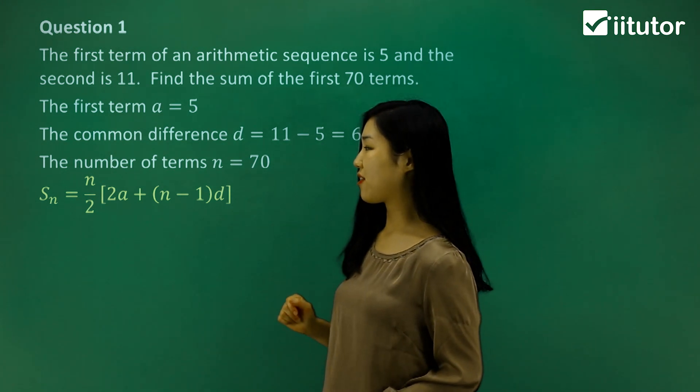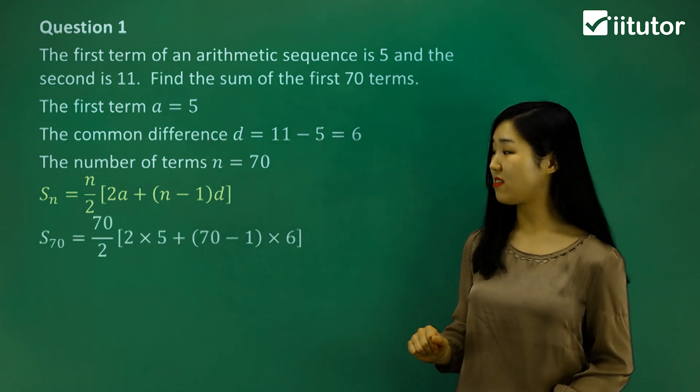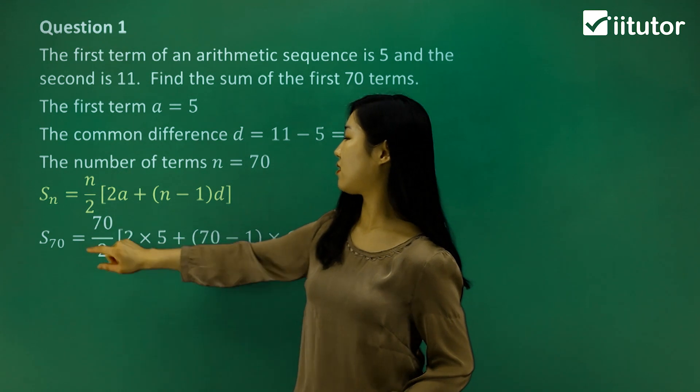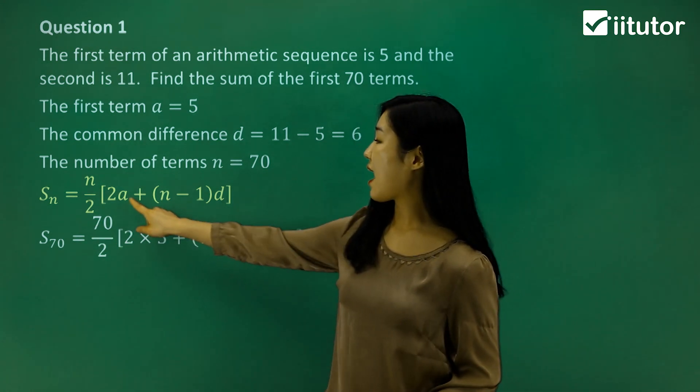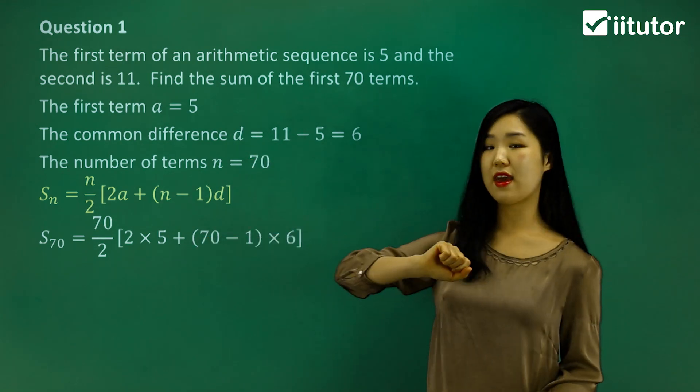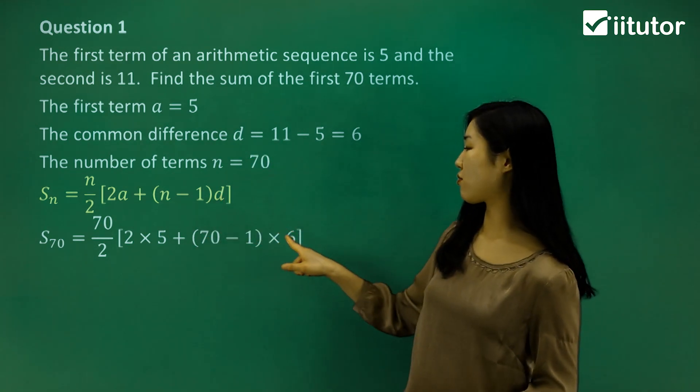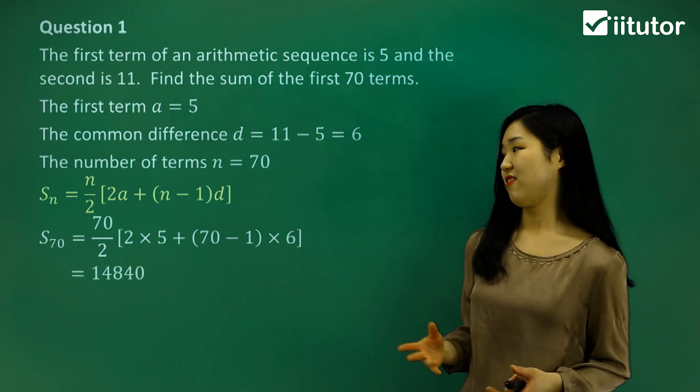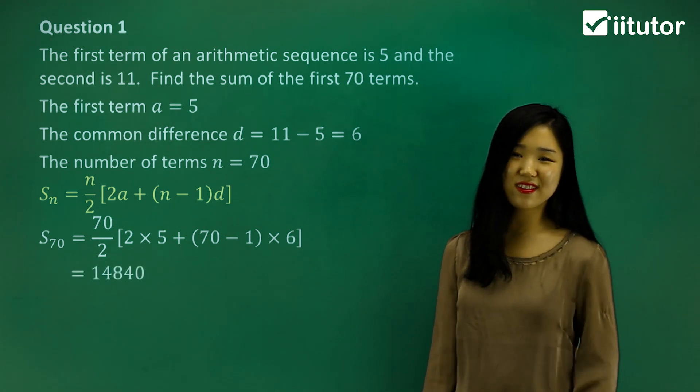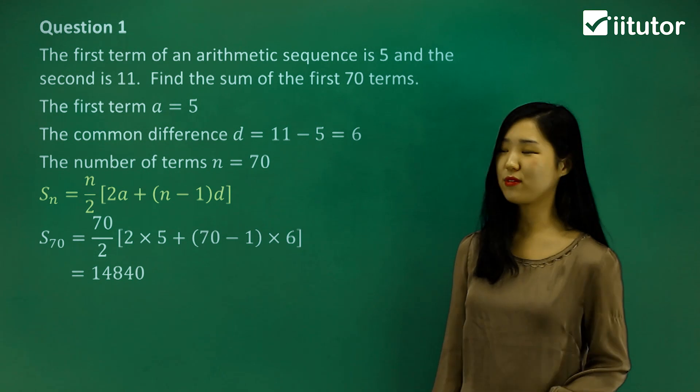And let's just put the values in. So n is going to be 70. So I've replaced the n with 70, and you can see that the 70 goes into that n as well. And then a is 5, so I'm going to replace the a with 5. And you can see the common difference I've replaced with 6. And let's just simplify it.